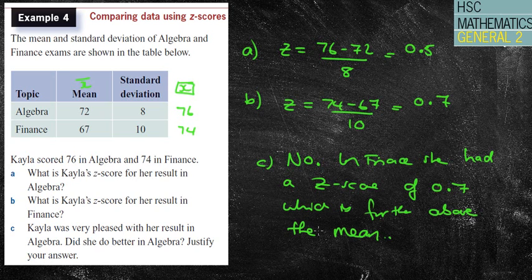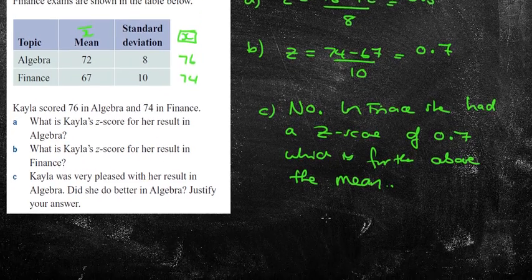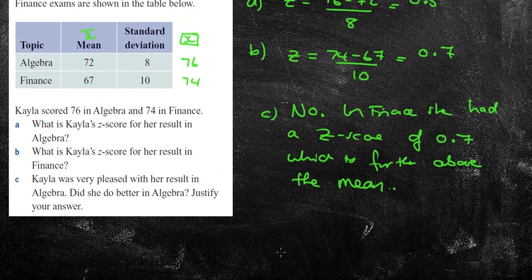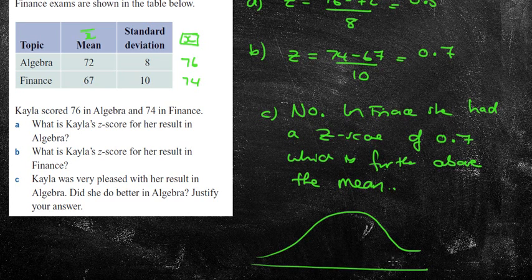If you're thinking about the normal distribution, we've got 0, we've got 1, 0.5 would be here. So that would be our algebra mark, and finance would be over here somewhere. So we can see that finance would be higher above the mean than the algebra, therefore the finance would be a better mark.